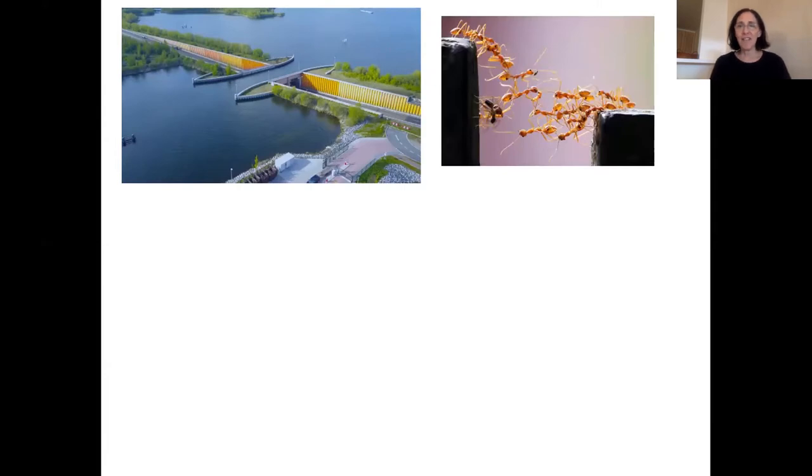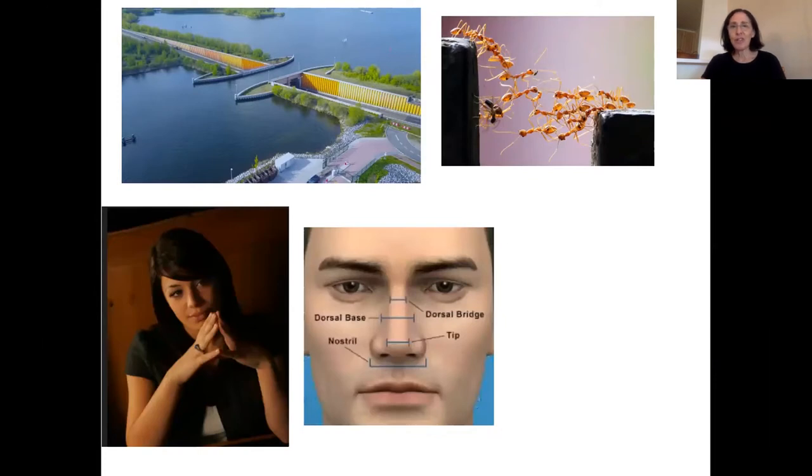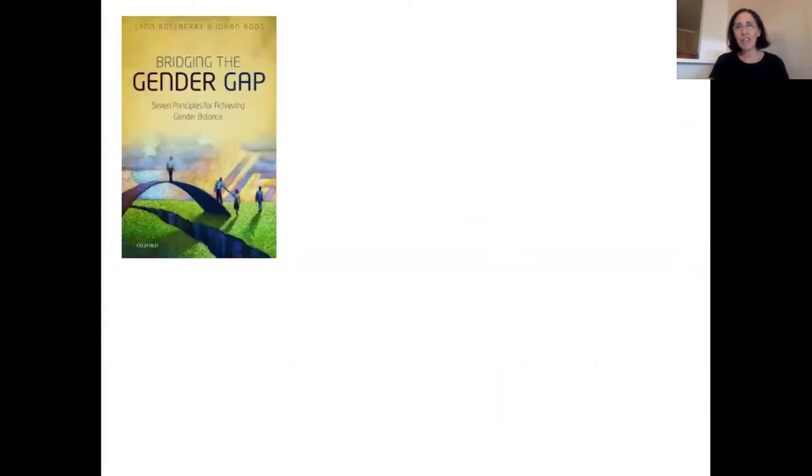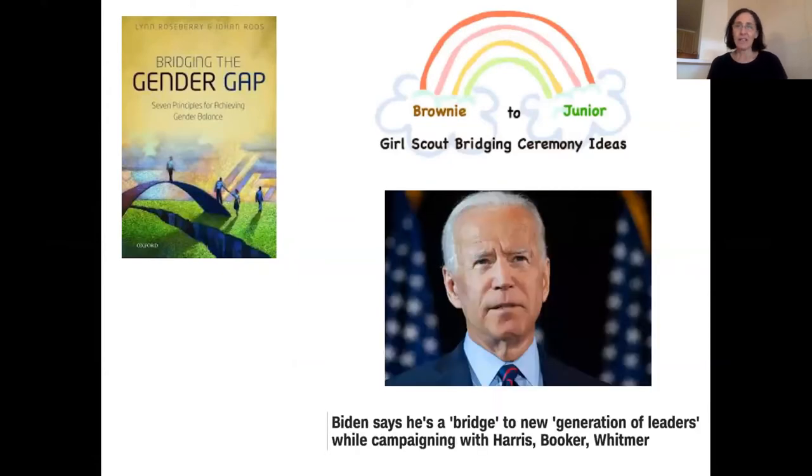We can also make sense of the idea that ants can build bridges out of their bodies to move from one surface to another, or that we can bridge our hands, or the notion of the bridge of your nose, or a bridge of a song. So we take these perceptual categories, and we're able to enlarge them in semantic abstraction to create rather abstract concepts like bridging the gender gap, or bridging from a brownie to a junior girl scout, or Biden, who says many times that he's the bridge to a new generation of leaders. This is really very much at the core of human intelligence, I believe.